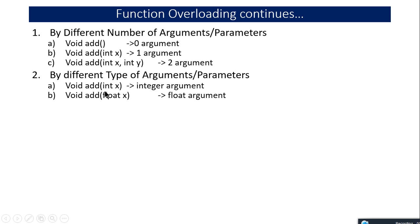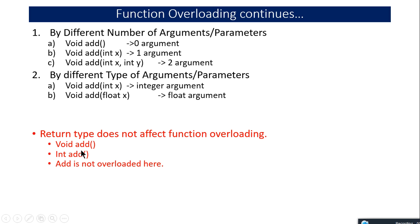Function overloading can also be achieved by changing the data type of the arguments — for example, passing an integer argument in one function and a float argument in another. However, changing only the return type will not implement function overloading, because when you call the function you only pass arguments and do not pass the return type. So the return type alone cannot differentiate overloaded functions.